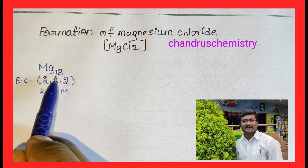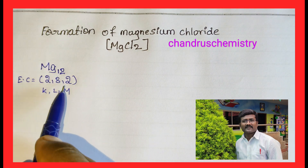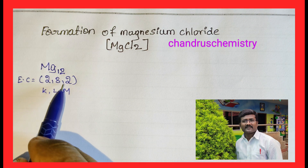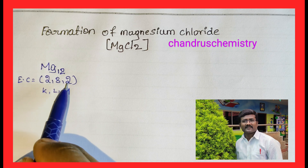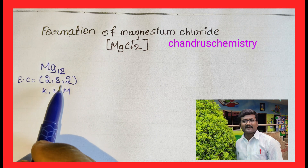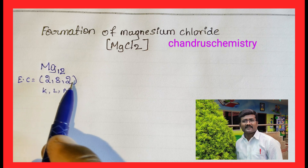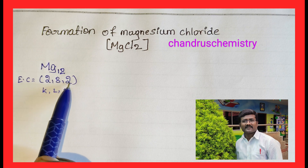The outermost shell, the M shell, contains 2 electrons, so Magnesium is a metal. In general, if the outer shell contains 1, 2, or 3 valence electrons, the element is a metal. If it contains 4, 5, 6, or 7, it is a non-metal. And if it contains 8, it is a noble gas, also called an inert gas.